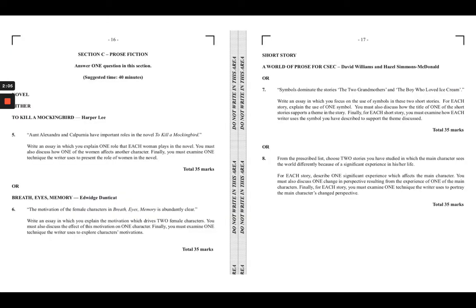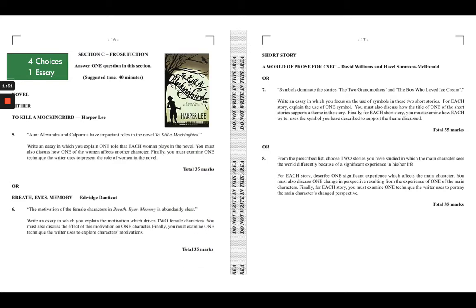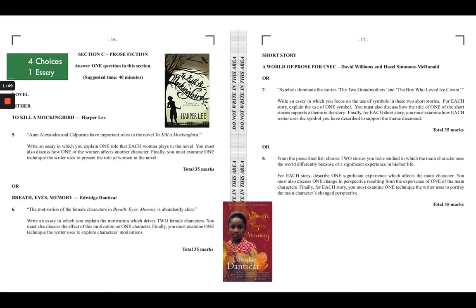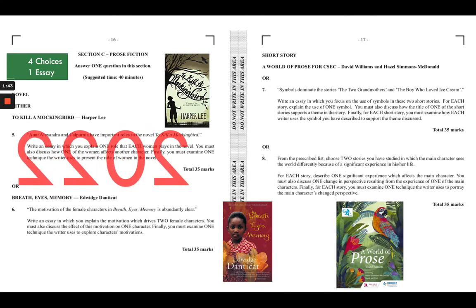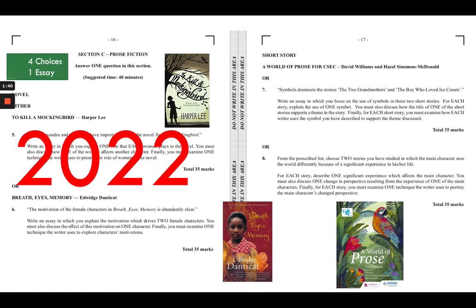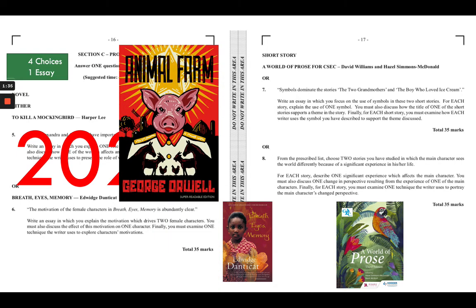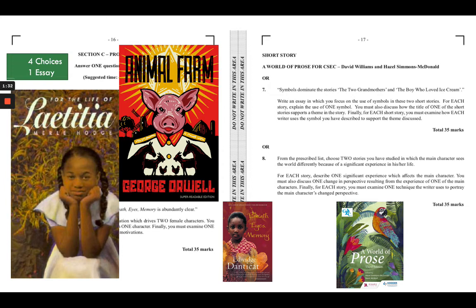Our final section is Prose Fiction. Here you are given four choices and must only select one. Your choices include two novels: To Kill a Mockingbird and Breath, Eyes, Memory. Please note that these are the novels for students writing the exam in 2022. If you are writing the exam in 2023, your novels are Animal Farm and For the Life of Letitia. There are also 10 short stories.